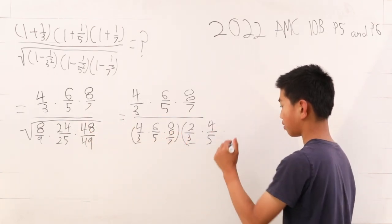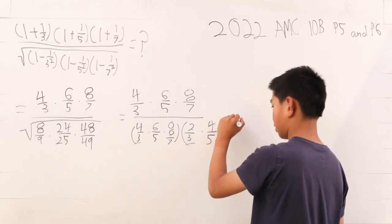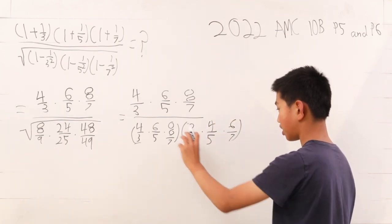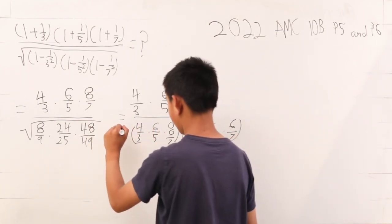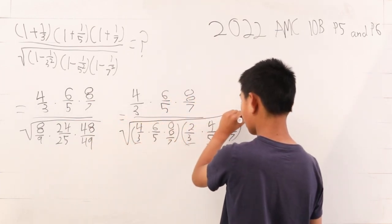And then you finally multiply it by 6/7, because 6/7 times 8/7 is 48/49. Now, if we take the square root of all of this...